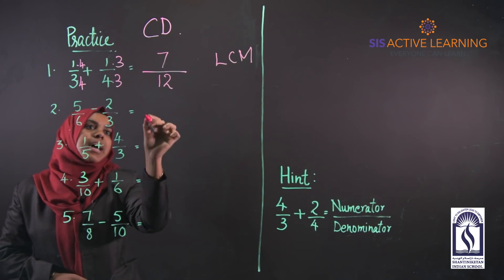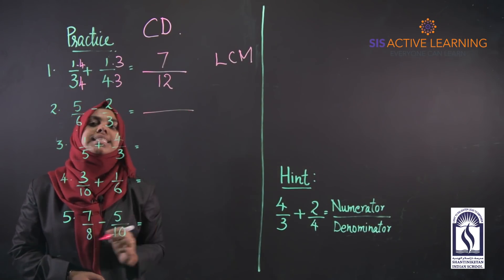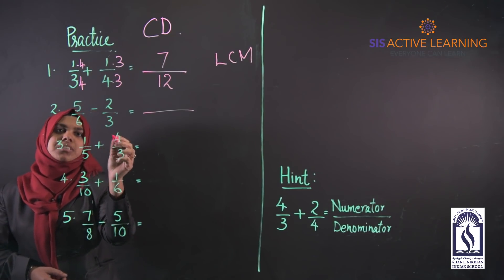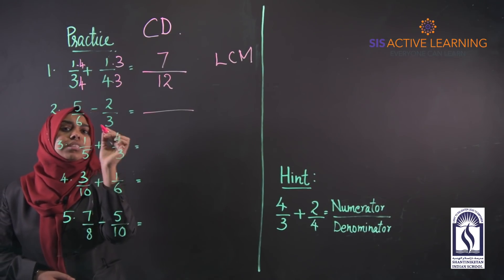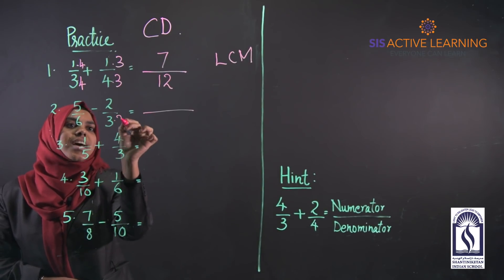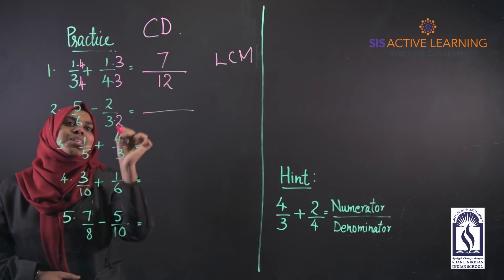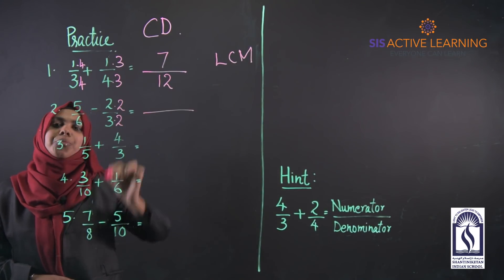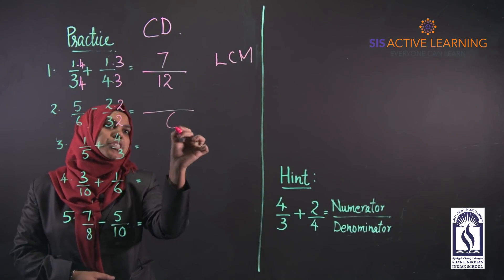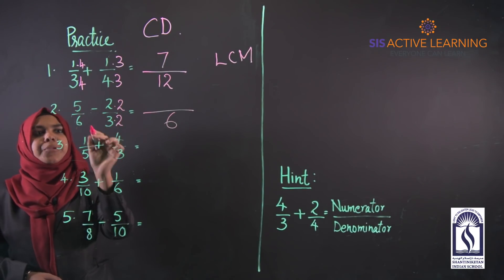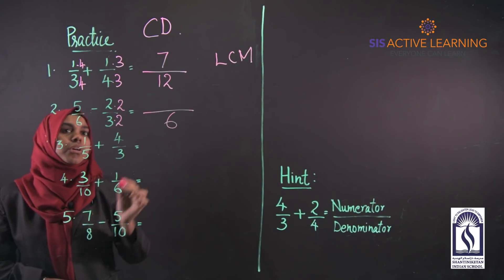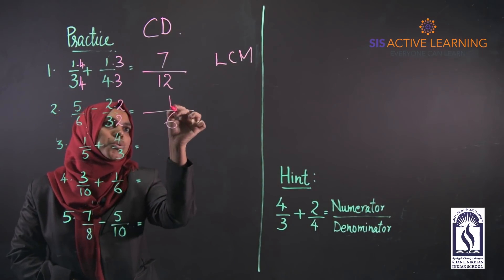Next, we have denominators 3 and 6. Since 6 is a multiple of 3 — 3 × 2 = 6 — we do the same operation in the numerator. The common denominator is 6. Subtracting the numerators: 5 − 4 = 1, so the answer is 1/6.